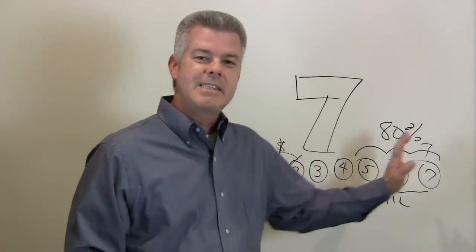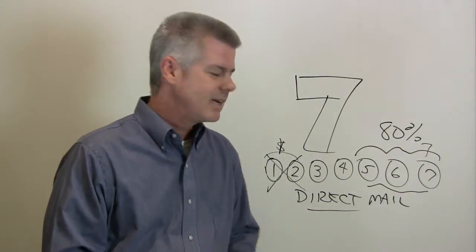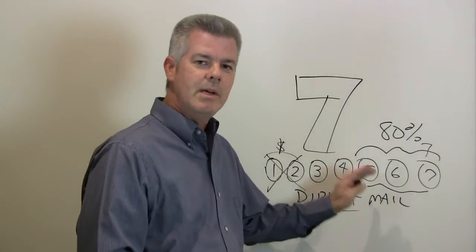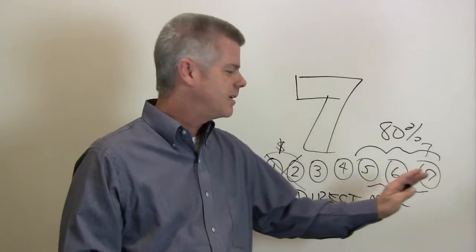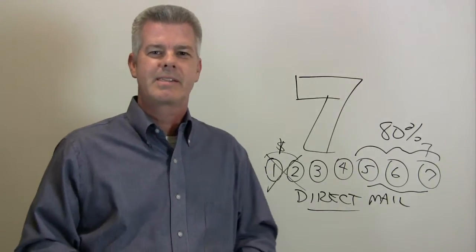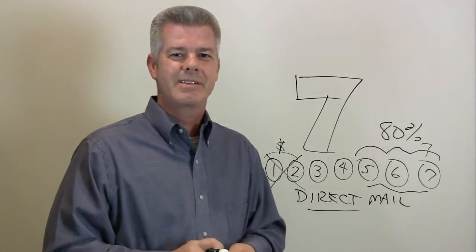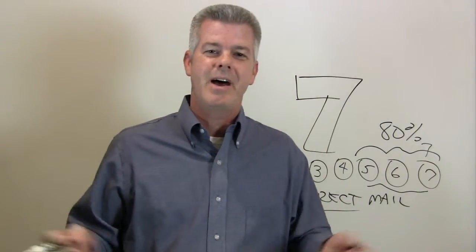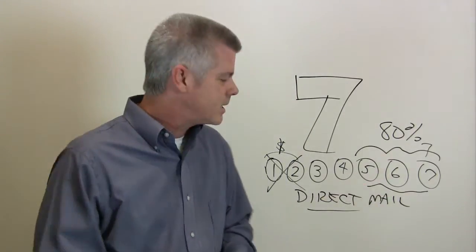But the thing is these things have a cumulative effect. After you've touched them seven times with your message, they are more likely to convert, to be somebody that calls you, that you can now see if they have a house that you can buy. That's how it works.